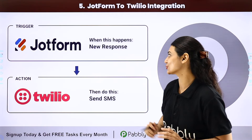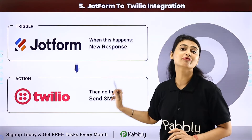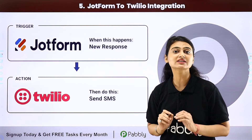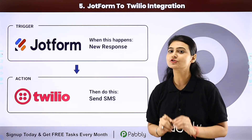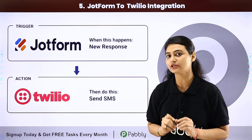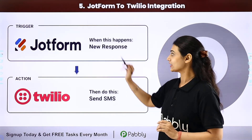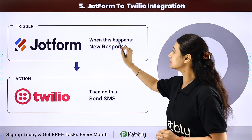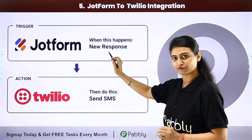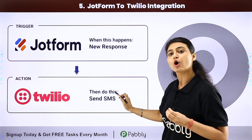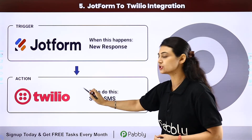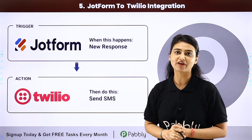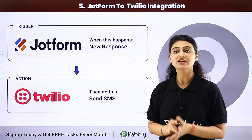Number five is Google Forms to Twilio integration — a classic automation. Over 70% of B2B businesses generate leads via strategic landing pages. You can attach your Google Form on your landing page, and the moment a new response is received, an SMS acknowledging the response will be sent via Twilio to your leads.